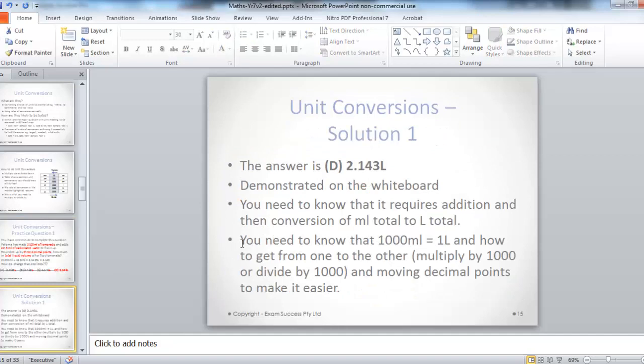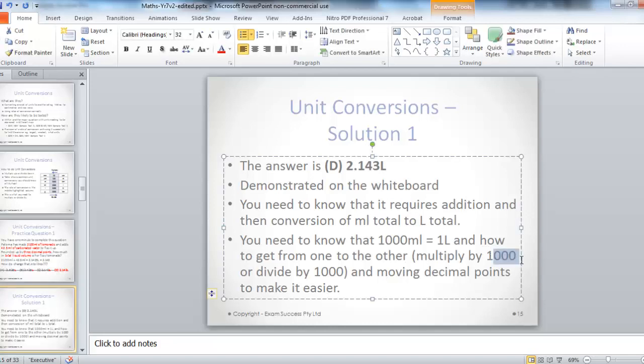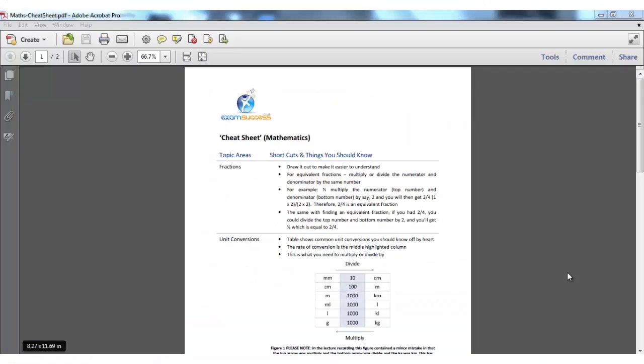Let's move on to the solution then. The solution says the answer is D, and I've demonstrated that. We know that it requires addition and the conversion of millilitres to litres. We need to know that 1,000 millilitres equals one litre, and you need to understand how to get from one to the other. You need to either multiply or divide by 1,000. And moving decimal points by how many zeros. In this case, by thousands, if you're dividing, you'd be moving it in one direction. If you're multiplying, you'd be moving it in the other direction.